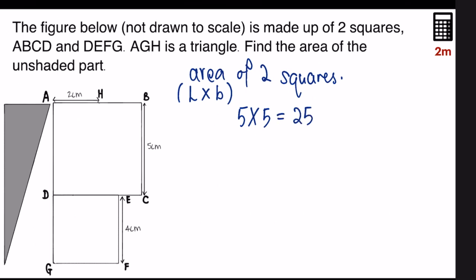And the small square is four times four, which equals sixteen. So let me sum them up because they are joined together. Twenty-five plus sixteen equals forty-one. So the sum of these two squares is forty-one square centimeters.